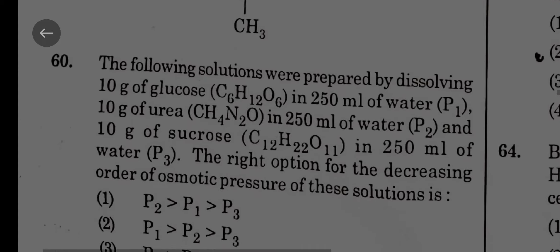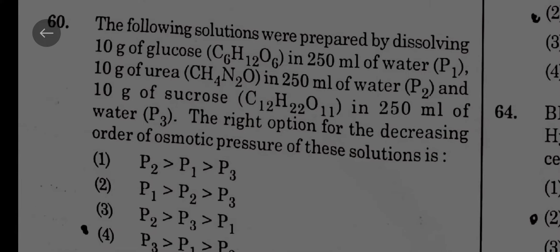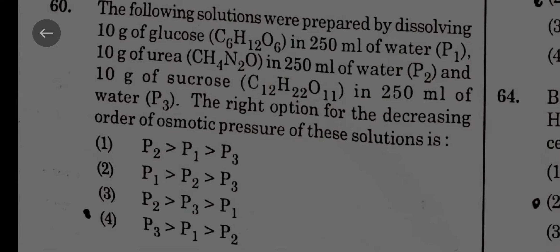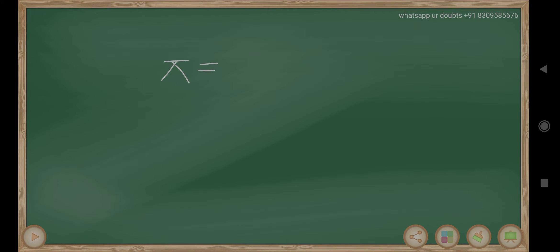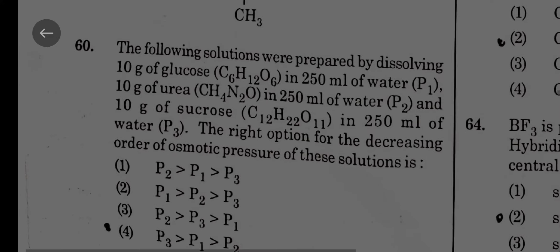The following solutions were prepared by dissolving 10 grams of glucose, urea, and sucrose in 250 mL water. The right option for osmotic pressure: osmotic pressure is inversely proportional to molecular mass. So urea molecular mass is less, that is 60, glucose 180, sucrose 342. Pi equals CRT, where C is molarity. Pi is proportional to 1 by molecular mass. So here the correct option is first option: P2, P1, P3, which is urea, glucose, then sucrose.